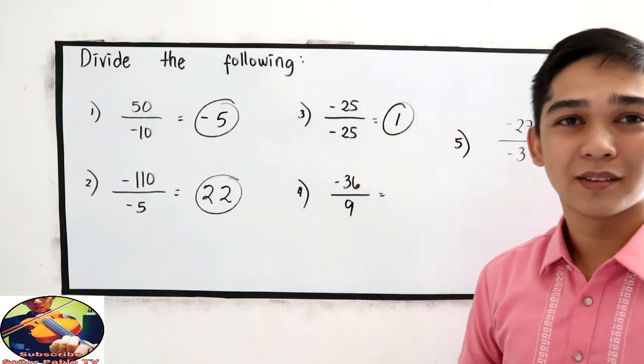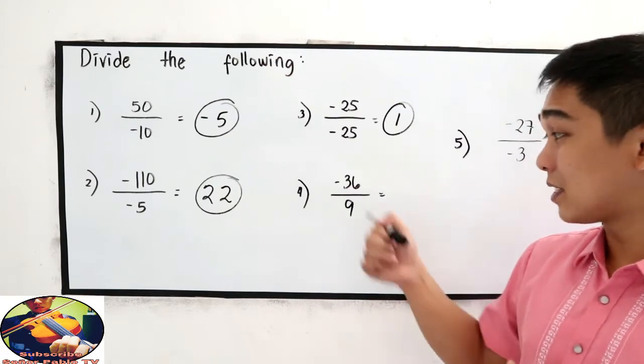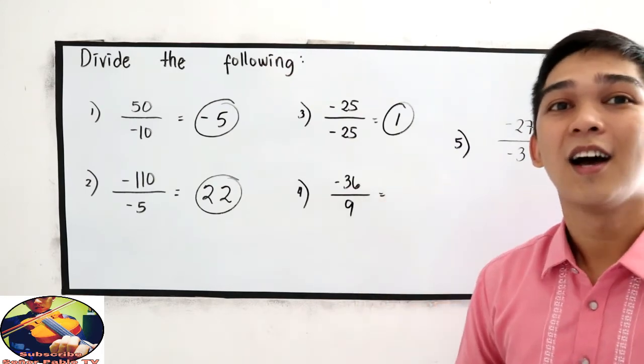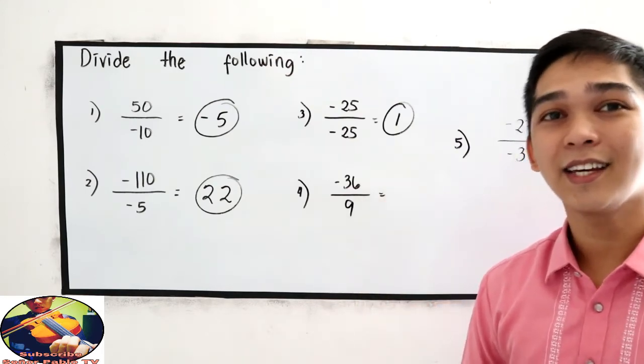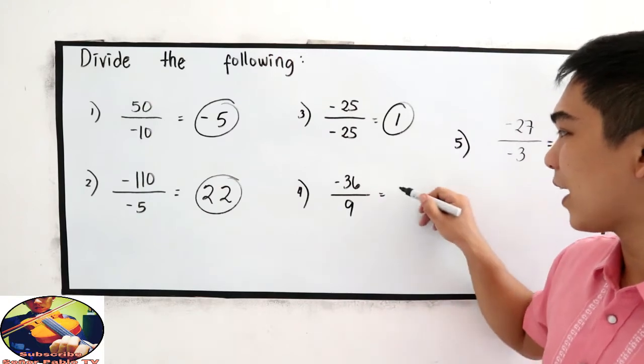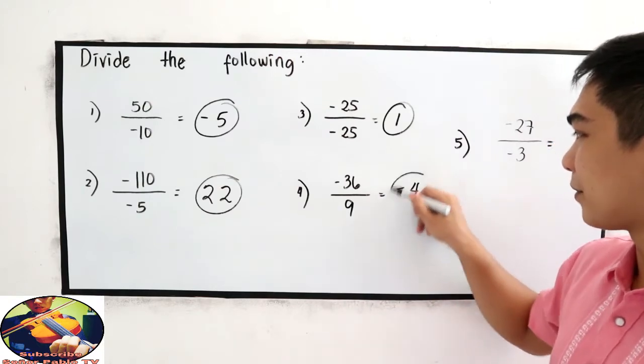Number 4. Negative 36 divided by 9. Unlike signs, so 36 divided by 9 gives us negative 4.